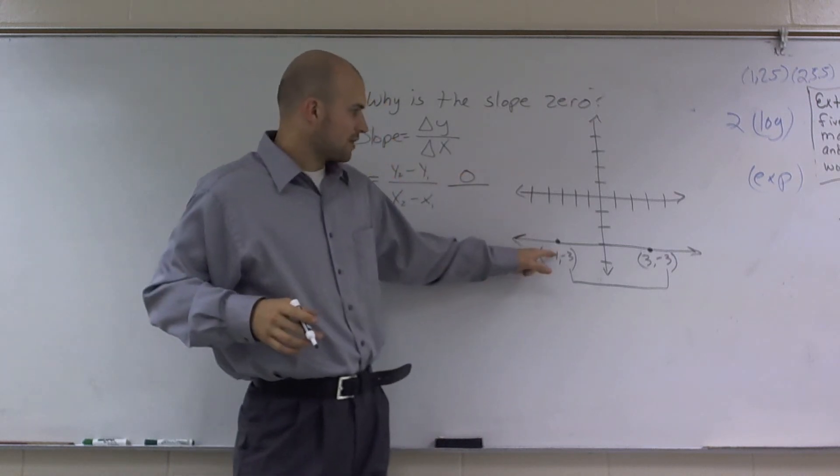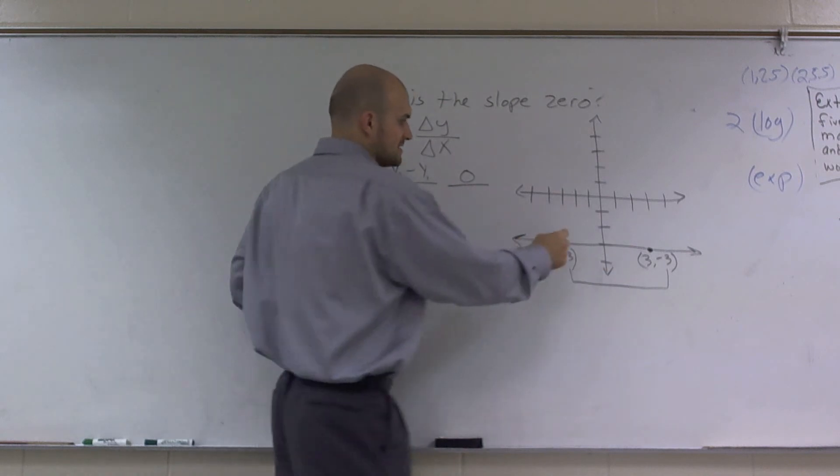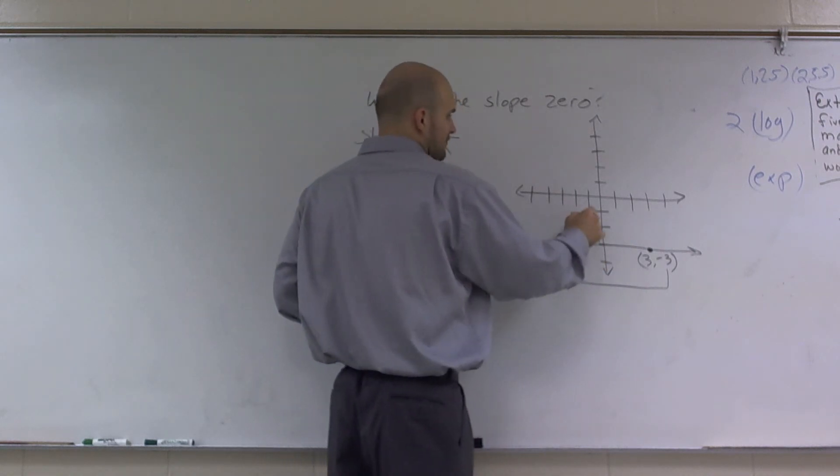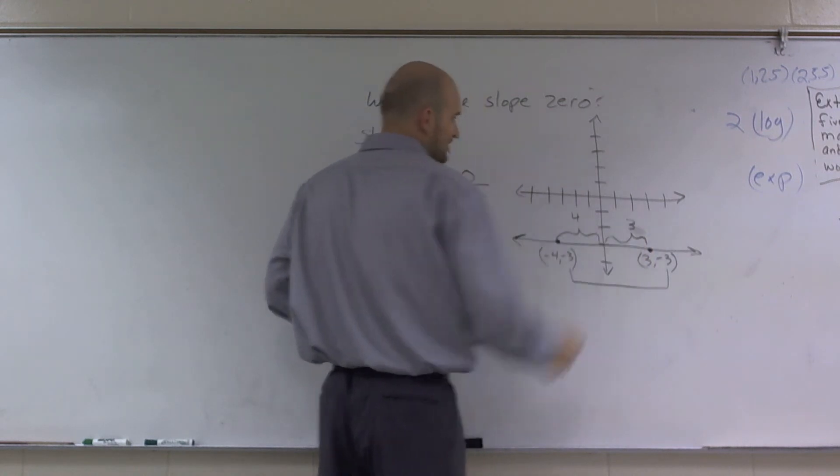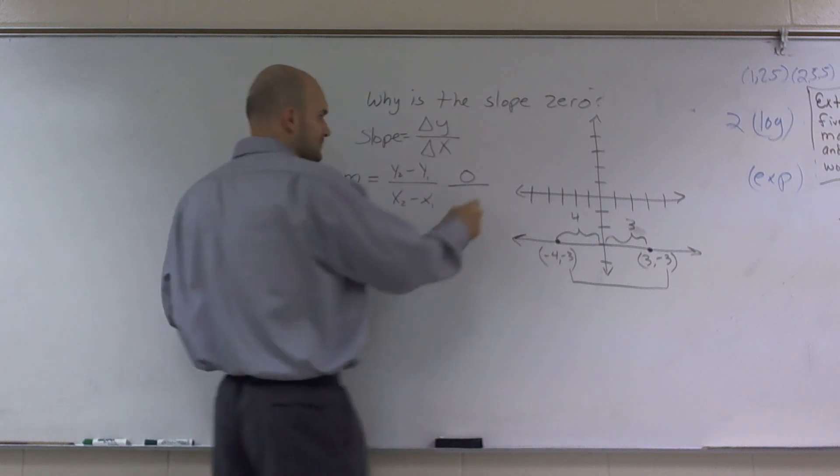And then to get from negative 4 to 3, well, to get from negative 4 to 0, I had to travel 4 units. And then to get from 0 to 3, I had to travel 3 units. So the positive distance I traveled was 7.